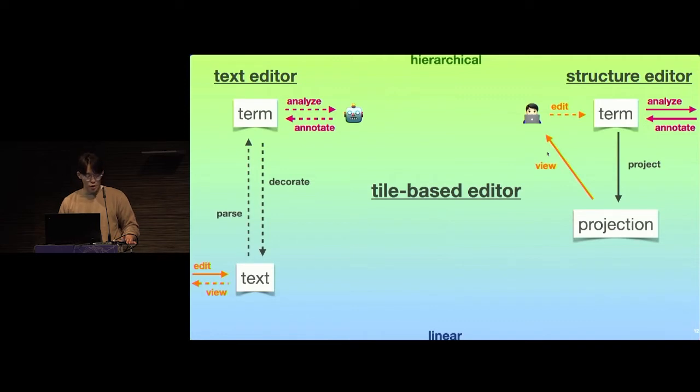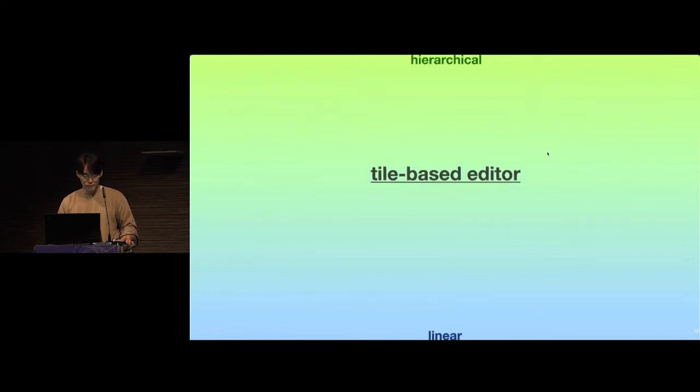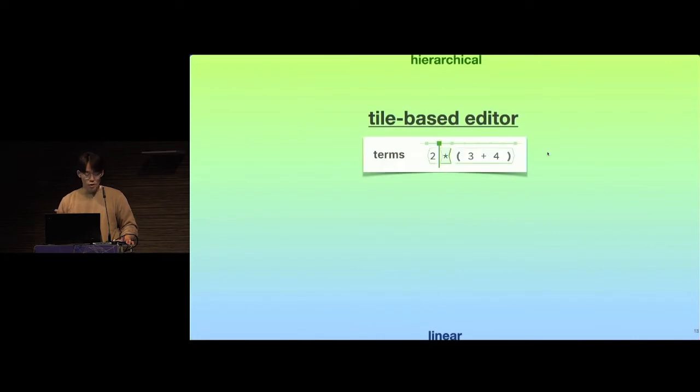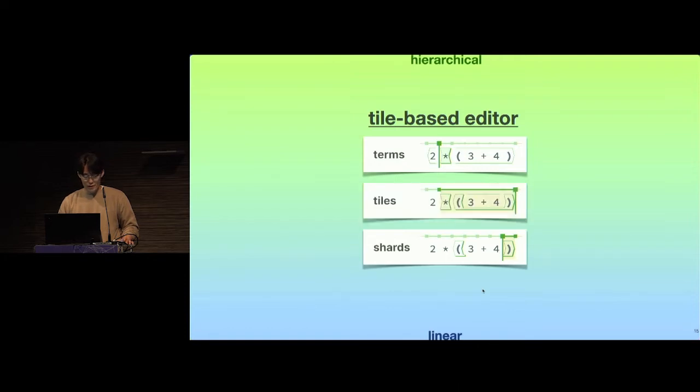Rather than restricting you to either the purely linear or purely hierarchical structure of your code, a tile-based editor lets you operate on three distinct structural levels. At the top are the familiar purely hierarchical terms. For example, here, the 2 and the parenthesized 3 plus 4 are children of the overall times expression. At the bottom are shards, which correspond to the lexical tokens of your code. Here, the left and right parenthesis shards are distinct structures that are related sequentially. And finally, in the middle are tiles, which correspond to complete sets of matching tokens. Tiles encode both linear and hierarchical structure. For example, here, the times tile and the parenthesis tile are in sequence, while the 3 plus 4 is a child of the parenthesis tile.